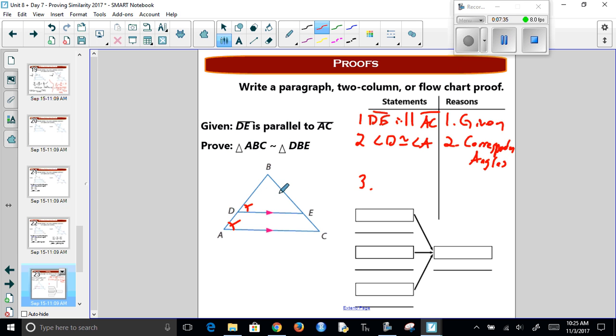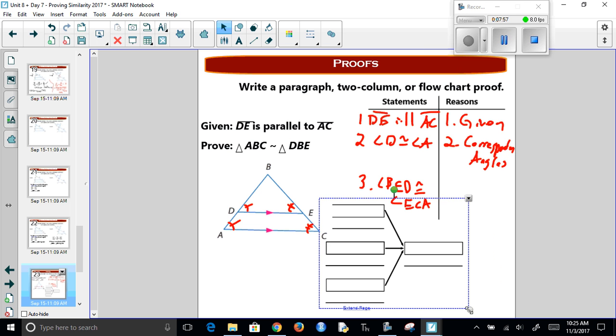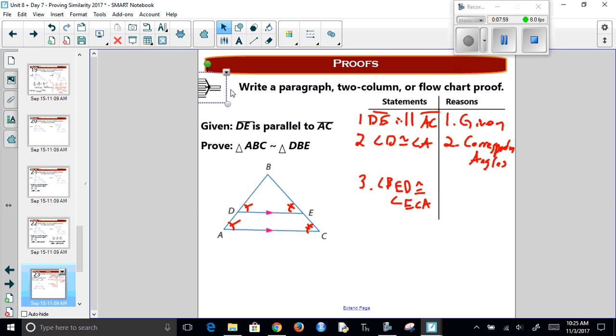3. We know angle E is congruent to angle C. And I should be more specific here. I should say angle BDE is congruent to angle BCA. Because there are multiple ways of representing this. And that's because of corresponding angles.